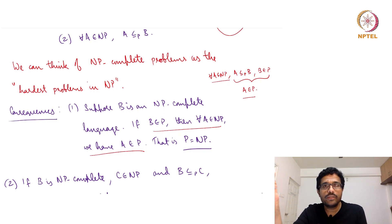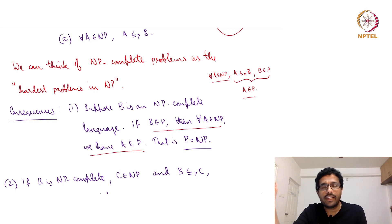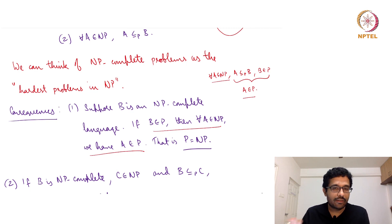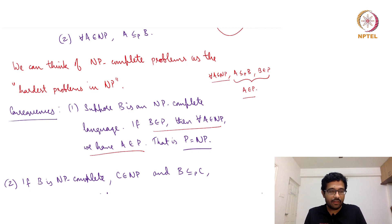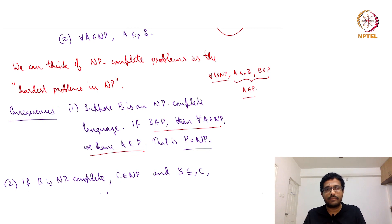To show that P equals NP, all you have to do is demonstrate a polynomial time algorithm for any one of these problems. But it has turned out that even doing that has proved very tricky — nobody has been able to do it so far. To show that P is not equal to NP, we have to show that some problem in NP or NP-complete does not have a polynomial time algorithm. Showing that something does not have a polynomial time algorithm is not easy, because given a problem, you could approach it in many different ways — how do you say that none of these approaches work? These so-called lower bounds are very hard to prove.